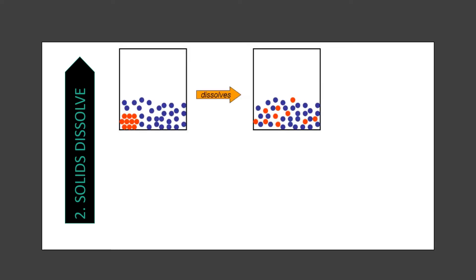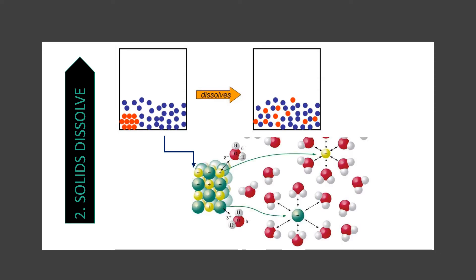The second instance is where entropy changes when solids dissolve in water to form aqueous ions. The particles, which were once in fixed positions in the solid state, are now free to move around in solution. The orange circles represent the solid, and once it dissolves in water — the blue circles — you can see the interaction between the two. The orange particles, now ions surrounded by water molecules, are able to move much more freely. Disorder increases from solid to aqueous ions, so the change in entropy is positive.